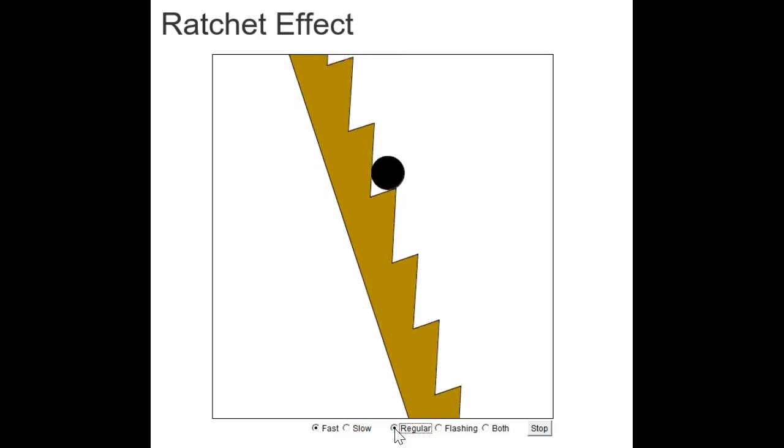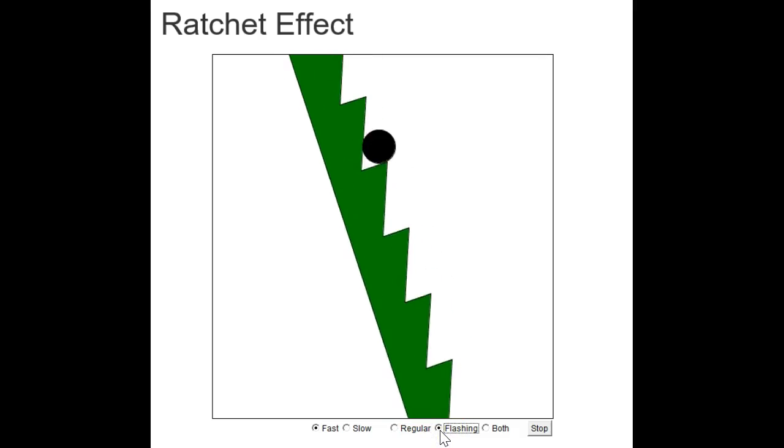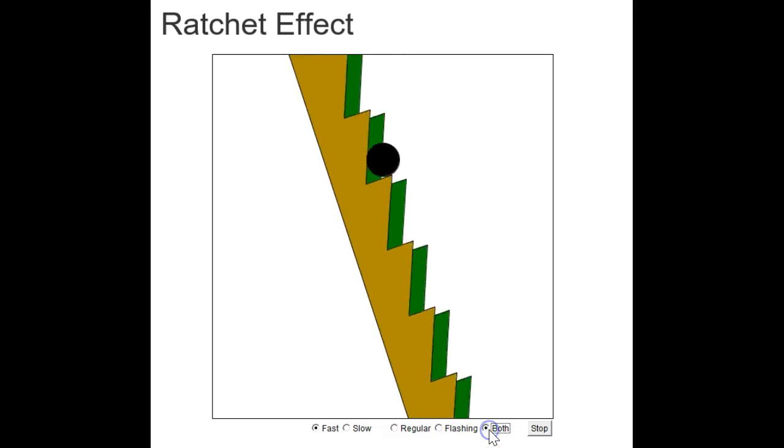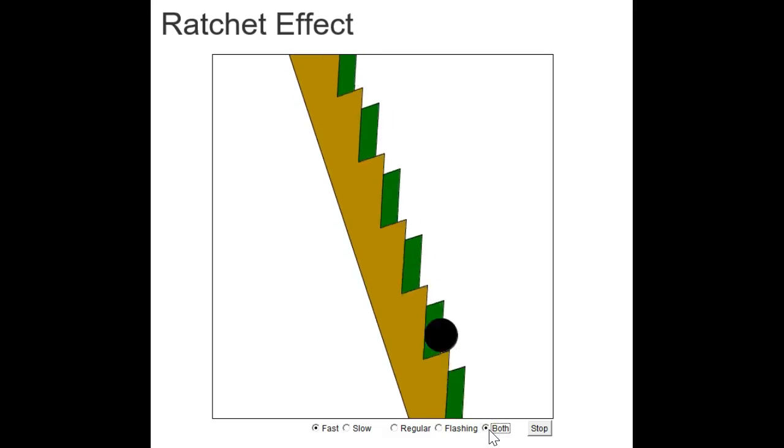Once again, just to repeat: if you go regular, that's the ball moving down and that's game A. And if you go flashing, that's the ball moving down and that's kind of game B, although that one was really herky-jerky. And if you do both, somehow working in unison, both games somehow push the ball up.